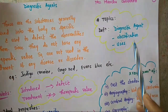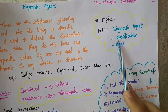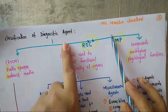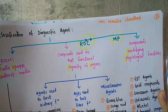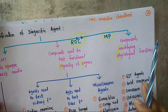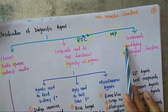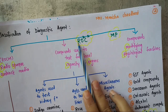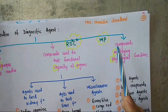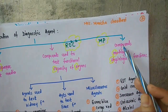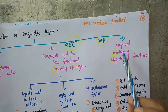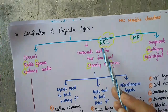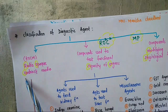Now we will move to the classification of diagnostic agents. To remember the classes, the trick is MP ROC — Madhya Pradesh rock. MP stands for compounds modifying physiological function. ROC stands for Radio Opaque Contrast Media.